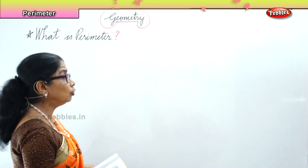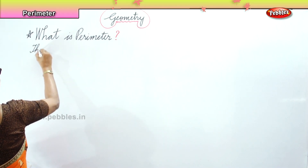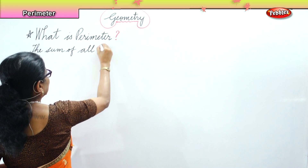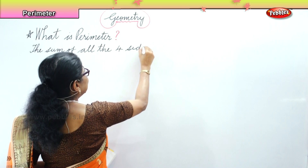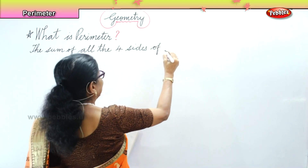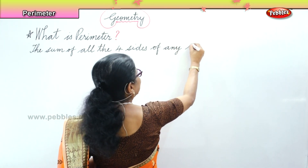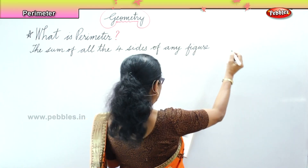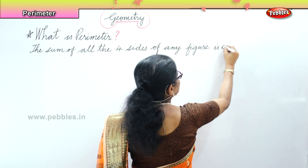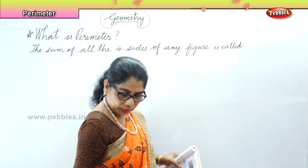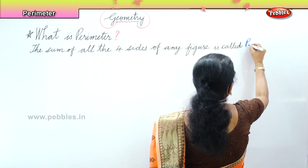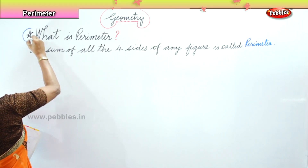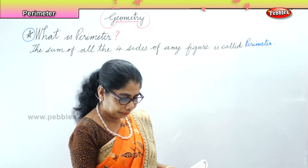What is the answer? The sum of all the four sides — the sum of all the four sides of any shape, or any figure. The sum of all the four sides of any figure is called perimeter. It's called perimeter.